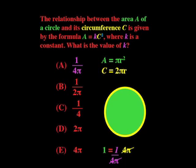So our answer is A, 1 over 4 pi, and we can remind ourselves that the stranger points to the right answer.